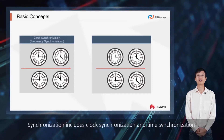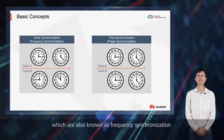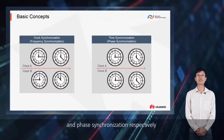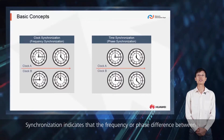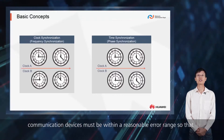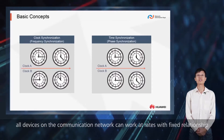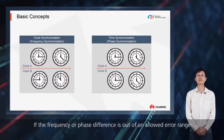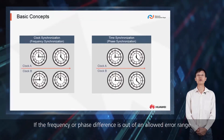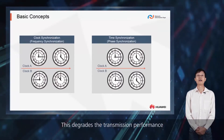Synchronization includes clock synchronization and time synchronization, which are also known as frequency synchronization and phase synchronization respectively. Synchronization indicates that the frequency or phase difference between communication devices must be within a reasonable error range so that all devices on the communication network can work at rates with fixed relationship. If the frequency or phase difference is out of an allowed error range, bit errors and jitter may occur, which degrades the transmission performance.